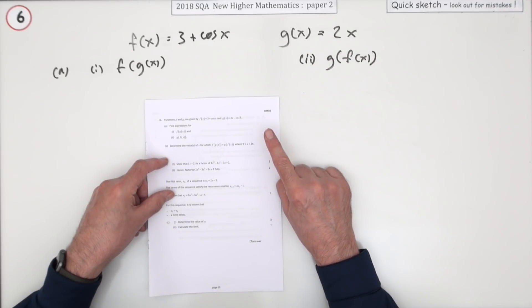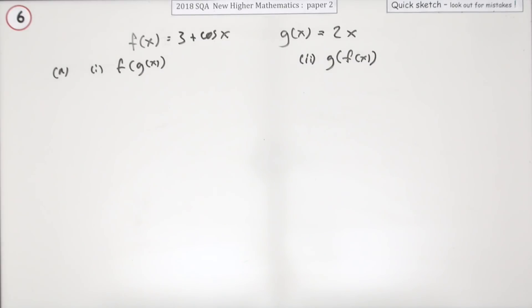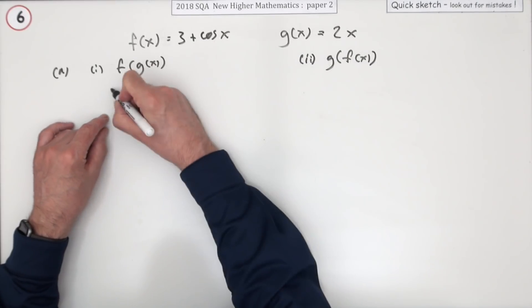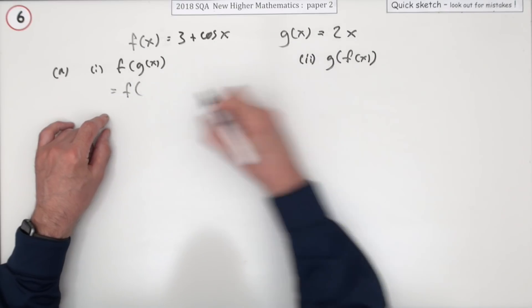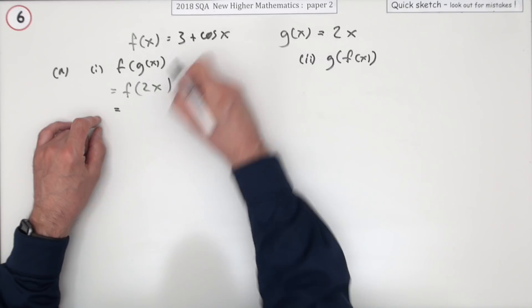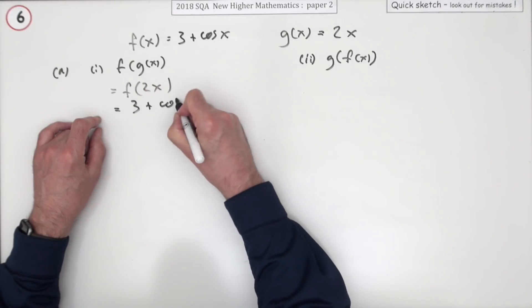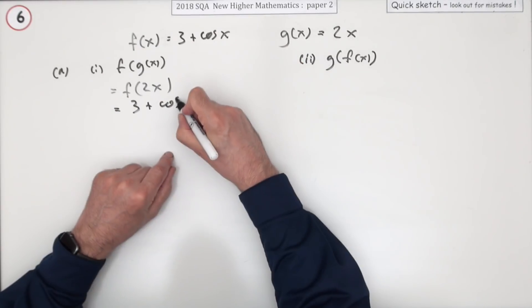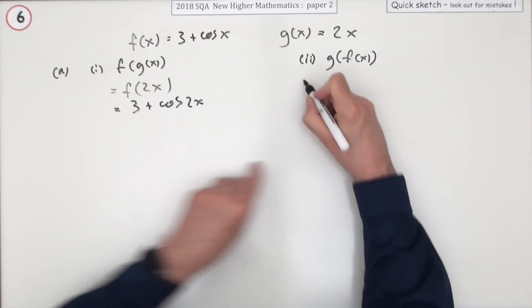First part, what do these come to? f of g of x. What does g of x give you? It gives me 2x. What does f(x) do to anything you give it? It does 3 plus the cosine of whatever you feed into it, so that was 2x.